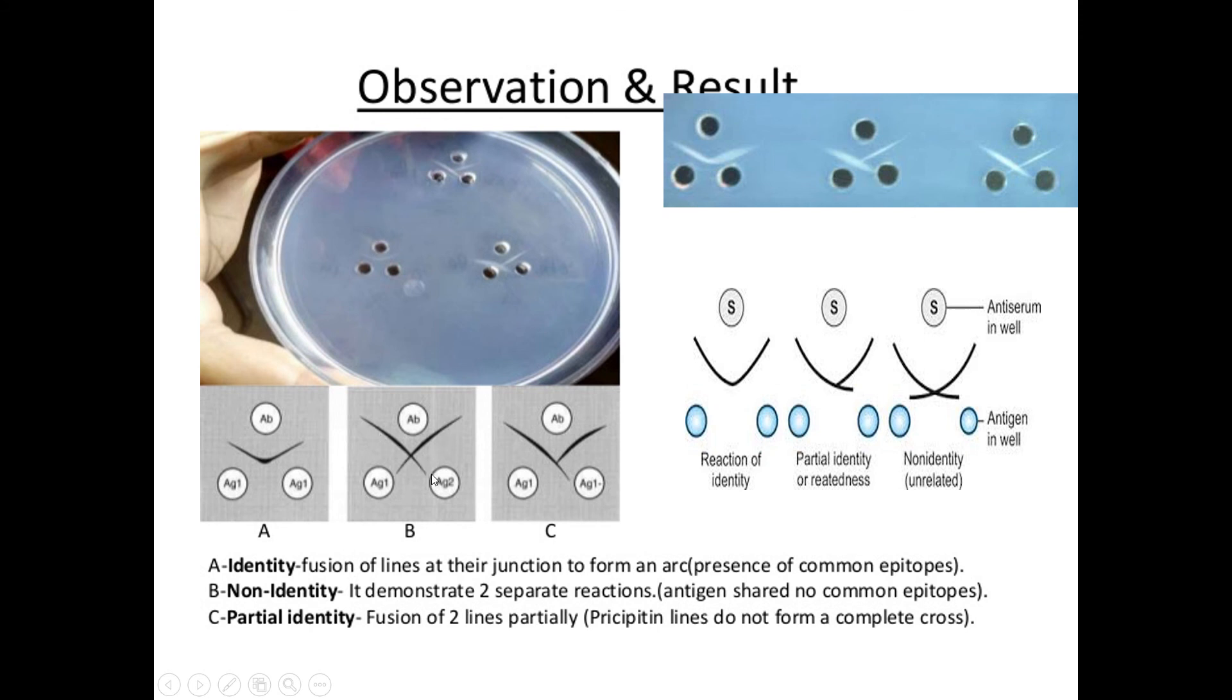Last is the reaction of partial identity. The antigen in one well and the antiserum in the center well comprise a homologous pair, and the antigen in the adjacent well is a cross-reacting antigen. The precipitate lines will form and fuse, but one additional spur will be formed which projects towards the cross-reacting antigen.